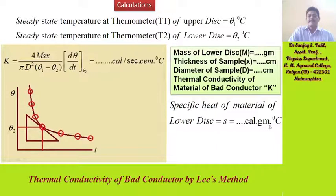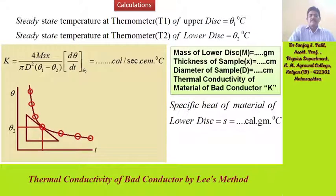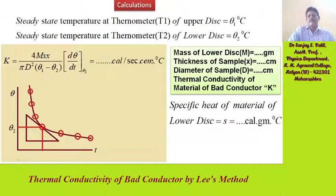The specific heat of the material of the lower disk is small s, in calories per gram per degree centigrade. Thermal conductivity of the bad conductor, capital K, is given as: K = (4mSX) / (πD² × (theta1 − theta2)) × (dθ/dt) at theta2, where dθ/dt is the slope taken from the cooling curve at theta2, and its units are calories per second per gram per degree centigrade.